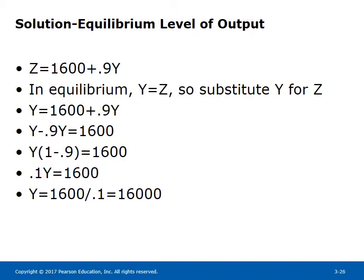Solution — equilibrium level of output. Z equals 1,600 plus 0.9Y. In equilibrium, Y equals Z, so substitute Y for Z: Y equals 1,600 plus 0.9Y. Y minus 0.9Y equals 1,600. Y times (1 minus 0.9) equals 1,600. 0.1Y equals 1,600. Y equals 1,600 divided by 0.1 equals 16,000.